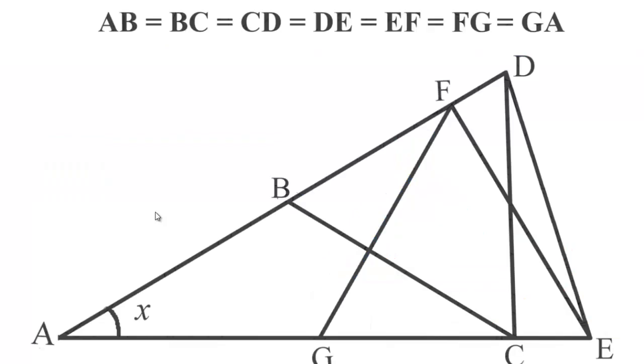So let us start with the problem. In this problem we are given that side AB equal to side BC. So by property one, angle BCA equals to angle BAC, that is both angles will be X.